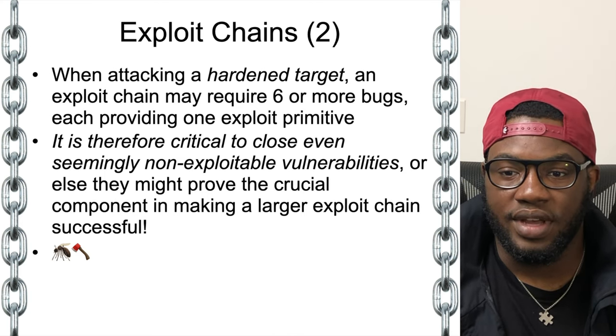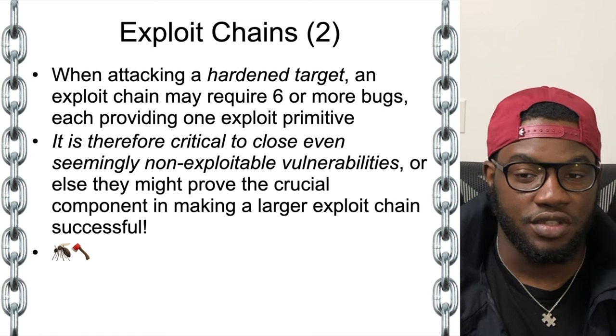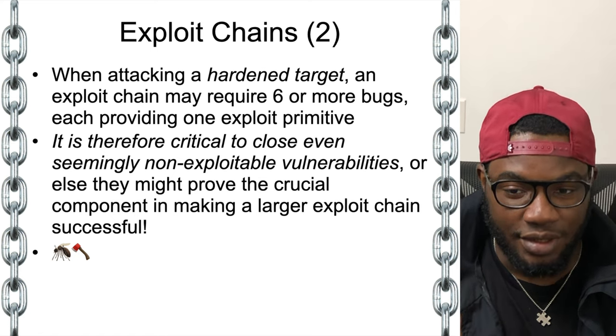An exploit chain involves putting together multiple exploit primitives to achieve the ultimate goal. When attacking a weak target, a single bug may provide all necessary primitives. However, most hardened targets in modern technology require multiple bugs that unlock multiple primitives which, when chained together, achieve the ultimate goal. It is therefore critical to close even seemingly non-exploitable vulnerabilities, because they could be leveraged by an attacker for a much larger goal.